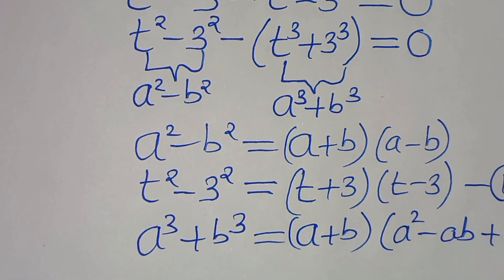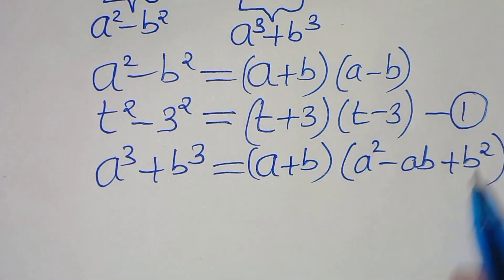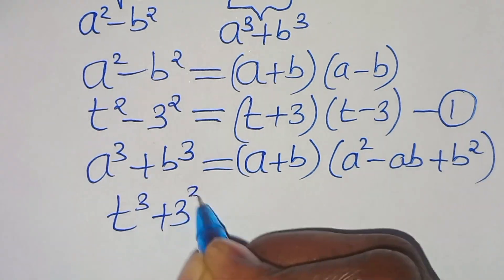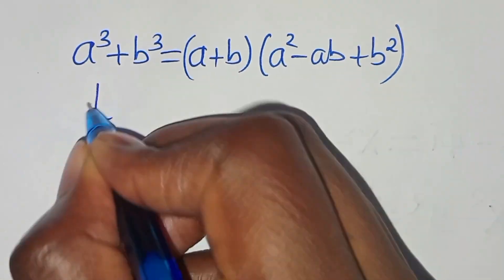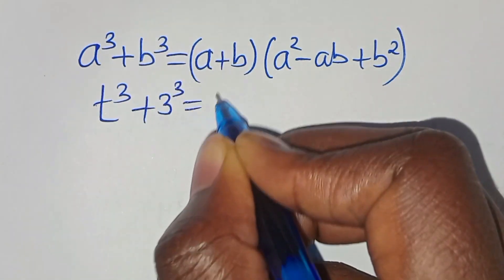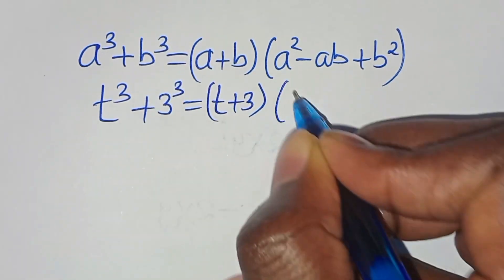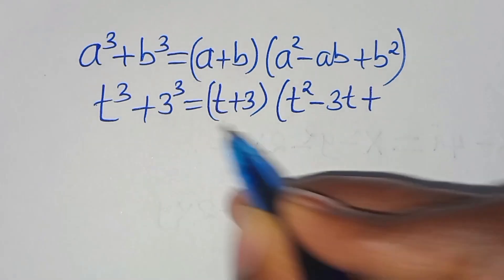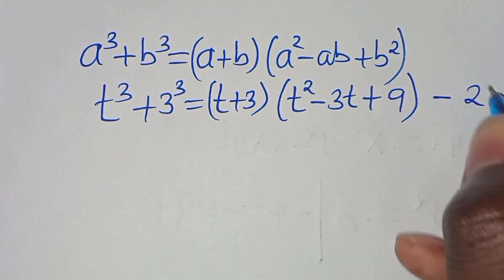Let's apply this identity. Applying this identity, t cubed plus 3 cubed can be expressed as (t plus 3), then multiplied by (t squared minus 3t plus 3 squared), which is 9. Let's call this equation 2.